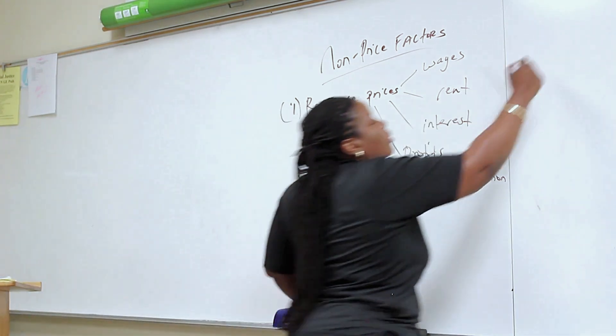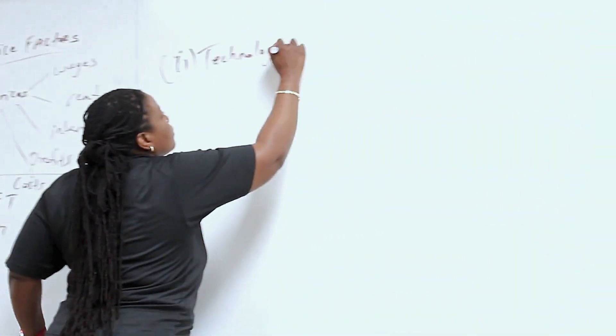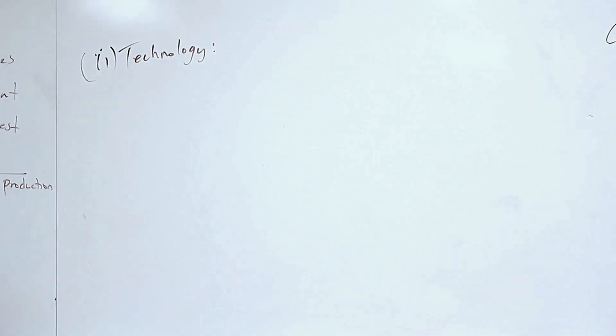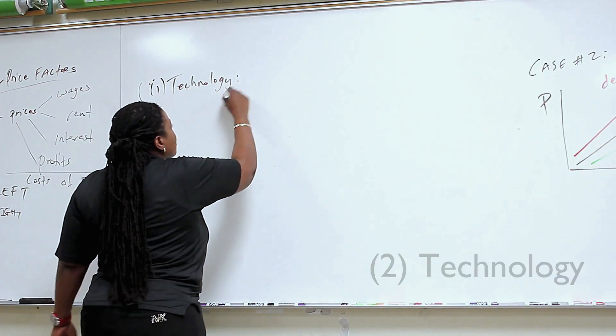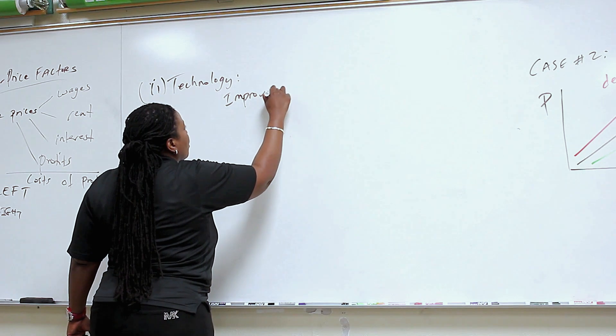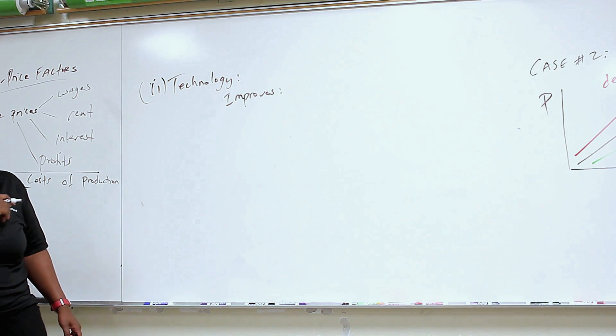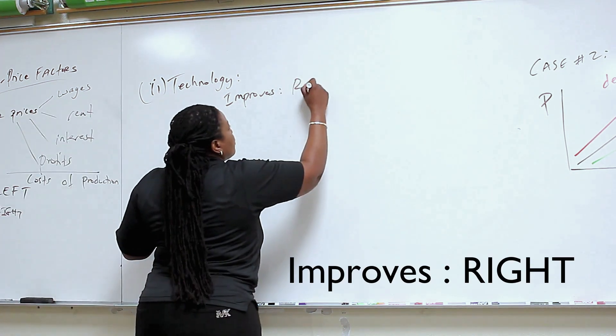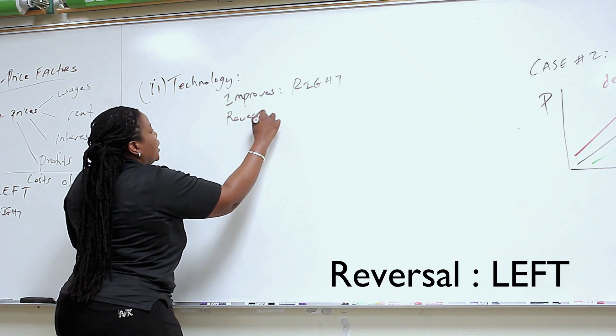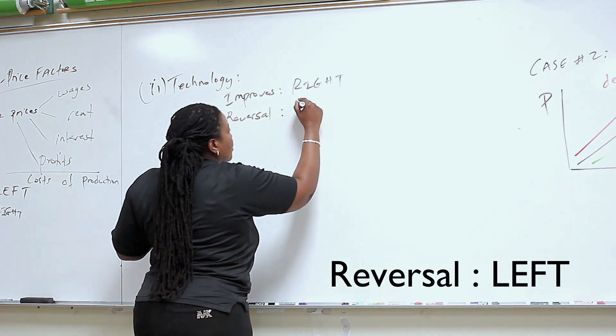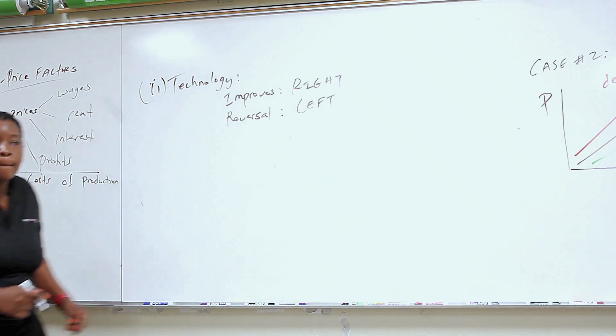So another variable: technology. And it's pretty straightforward. He gave an example. Technology improves. What do I do? You have an improvement in technology associated with a production process. Shift to the right. What about a reversal of technology? Then what? Shift to the left.